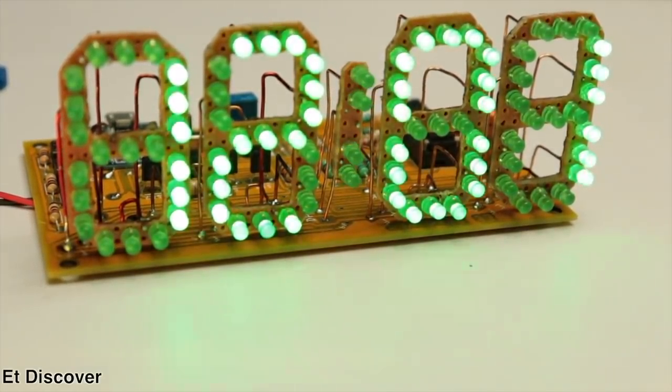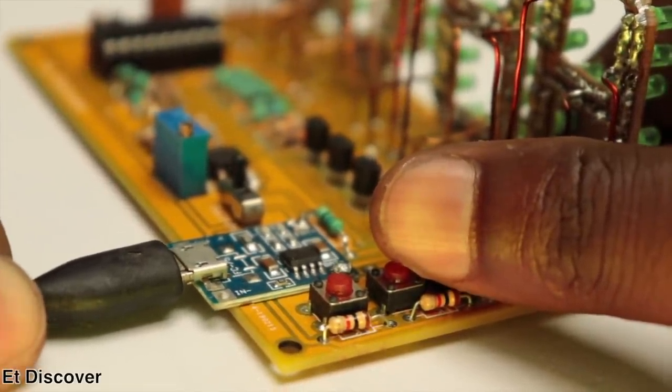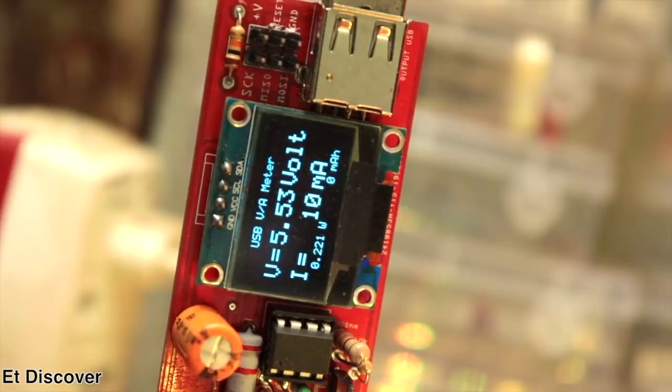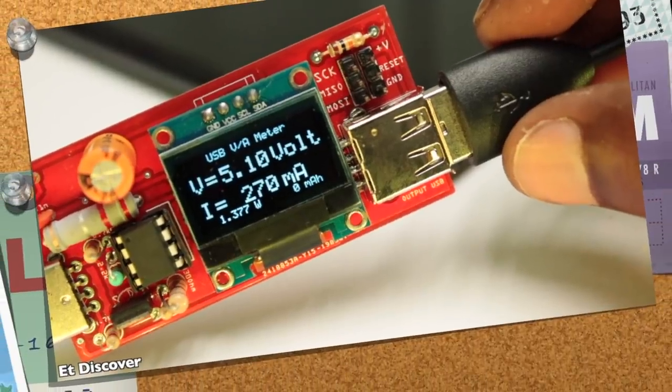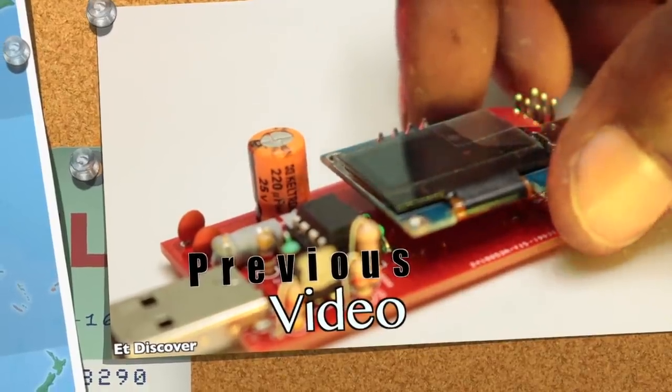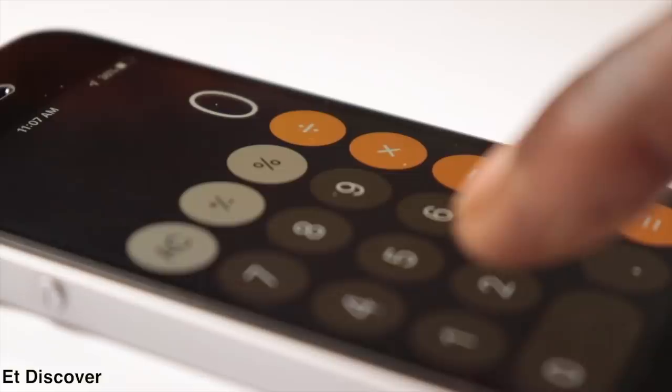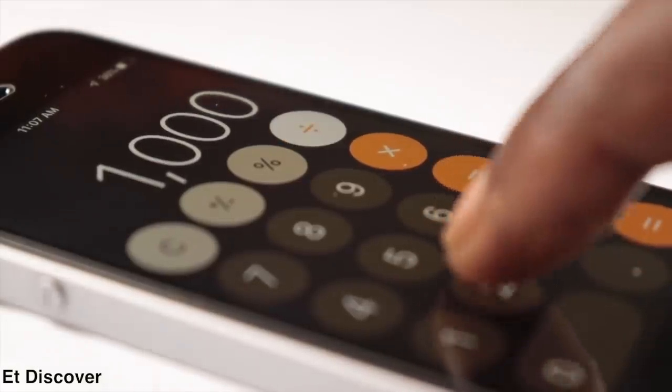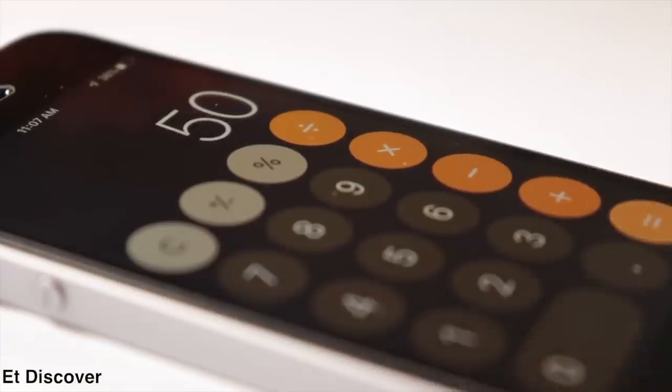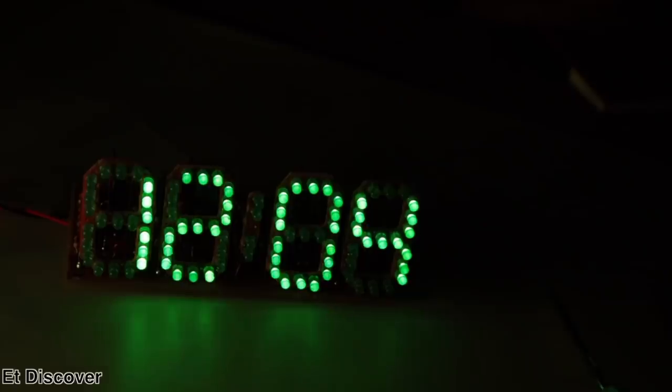Now the question is, how long will it run on a single charge? So I connect a USB cable to this clock without battery. On the other end of the cable, I connect a USB doctor that I already made in a previous video. You can find the link in the description. After running the clock, I analyze that the doctor tells me the clock is consuming only 20mAh. So if I divide the 1000mAh battery by 20mAh, then I get 50 hours to run this clock. If you run low brightness mode, you can run it more.